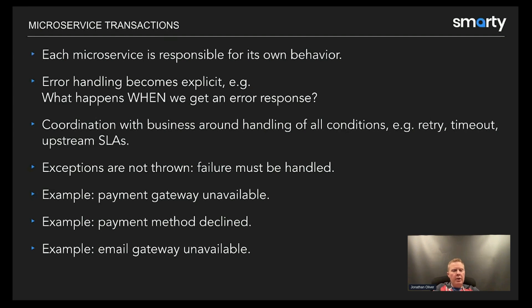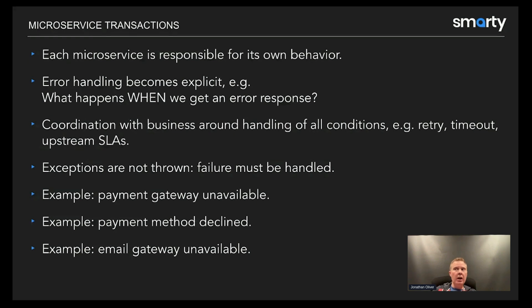Now the error handling can become very explicit. What happens when we get an error response and Stripe is unavailable? The user is unblocked — we've already received the order. We're just waiting for Stripe to process payment. If we get a decline, that's one workflow. If Stripe is unavailable due to an outage, we can build in explicit error handling around that business condition. You talk to a domain expert: if Stripe's down for an hour, do we send an email to the customer saying we're working on it? Or do we simply retry?